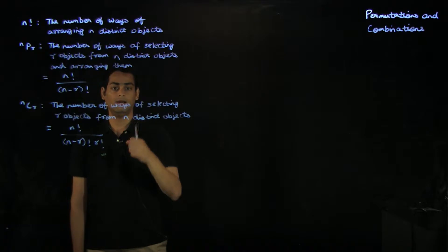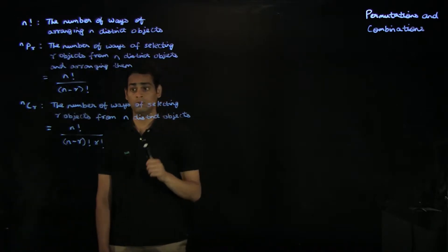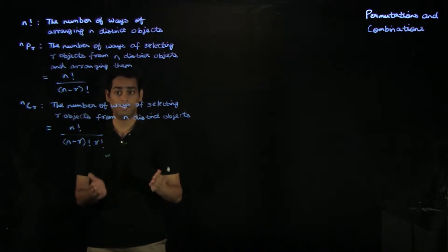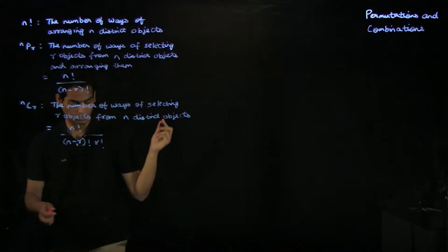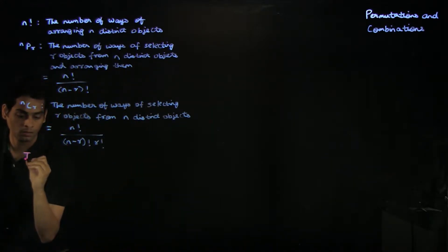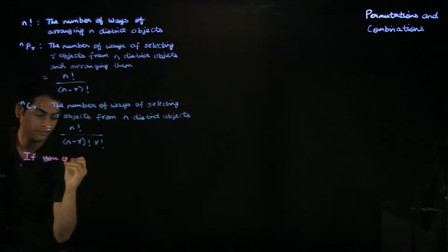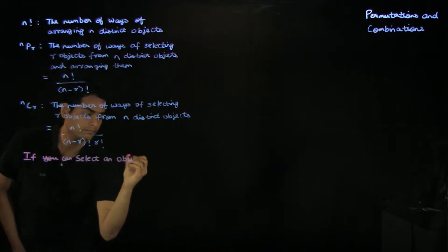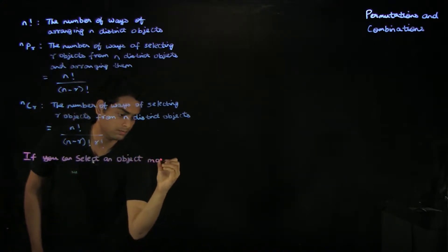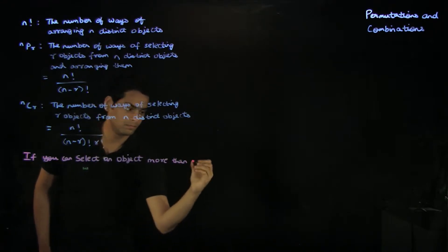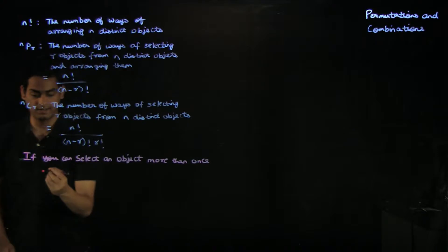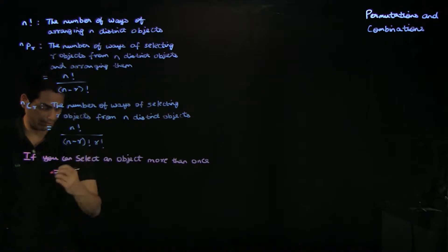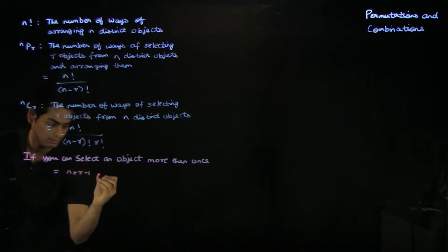In this case, we only allow selecting each object once — we assume that once we've selected an object, we can't select it again. This is the case when we are not allowed to repeat the selection. If you can select an object more than once, then the number of ways of selecting r objects from n distinct objects with repetition is given by n plus r minus 1, choose r.